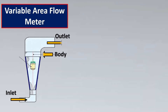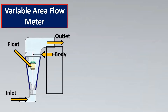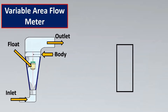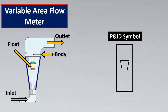Variable area flow meters have an inlet, outlet, body, and most importantly, a float. The P&ID symbol follows the same logic — first the body is drawn, then the float in between. This is the P&ID symbol as per ISA 5.1 for variable area flow meters.